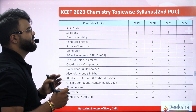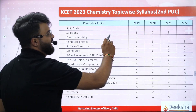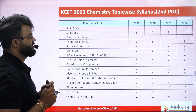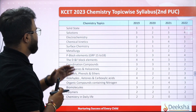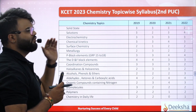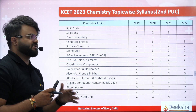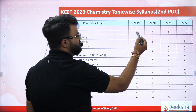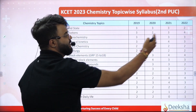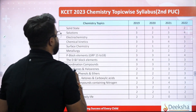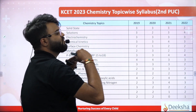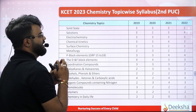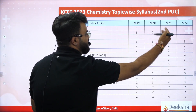In the solid state, there are three questions. In solutions, there are only two questions. In electrochemistry, it is constant — 3, 3, 3, 3, 3. In chemical kinetics, it is 3, 3, 4, 3. Comparing 2019, 2020, 2021, and 2022.